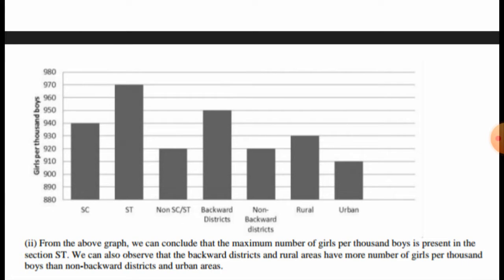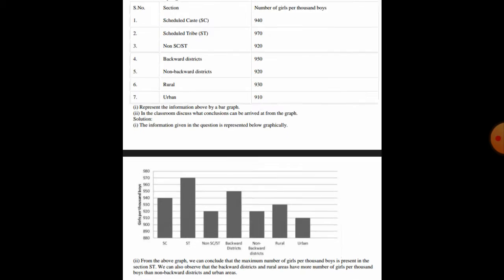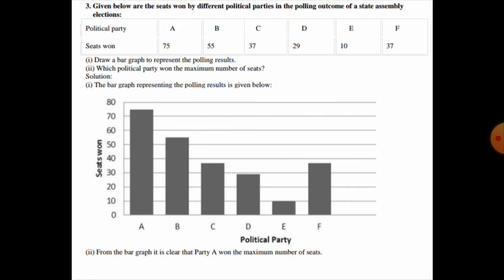From the above graph, we can conclude that the maximum number of girls per thousand boys is present in the Scheduled Tribe section. We can also observe that backward district and rural areas have more girls per thousand boys than non-backward district and urban areas.